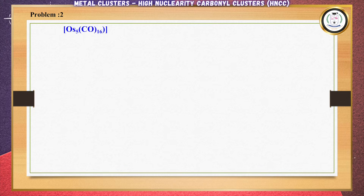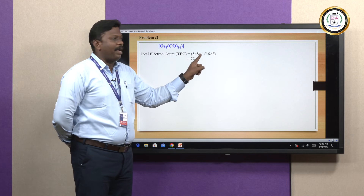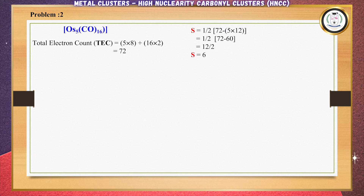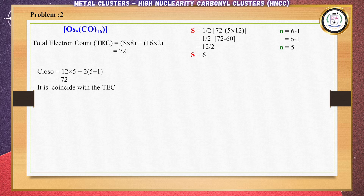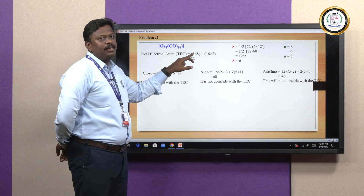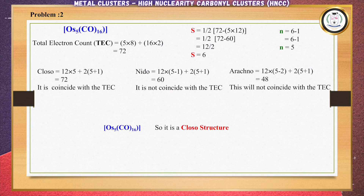Next problem: Os5(CO)16. Osmium has 8 valence electrons, multiplied by 5 atoms, plus 16 CO ligands contributing 2 electrons each. The total electron count is 72. Applying the S formula gives S = 6, and N = S − 1 = 5. Substituting N = 5 into the formulas: Closo gives 72, Nido gives 60, and Arachno gives 48. The total electron count coincides with Closo, so Os5(CO)16 confirms the Closo structure. The N value of 5 confirms the trigonal bipyramidal structure.